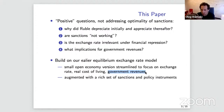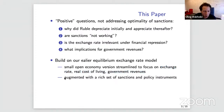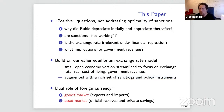We focus on three endogenous outcomes: exchange rate, real cost of living, and government revenue. We take many things as exogenously given, reading recession data or changes in financing conditions as a stochastic path of shocks. On the other hand, we bring in a very rich set of sanctions and policy instruments available to the Russian government and central bank — that's where the model is rich.